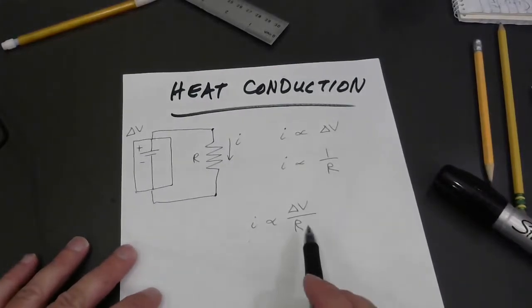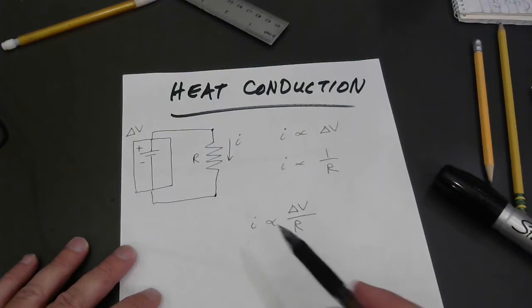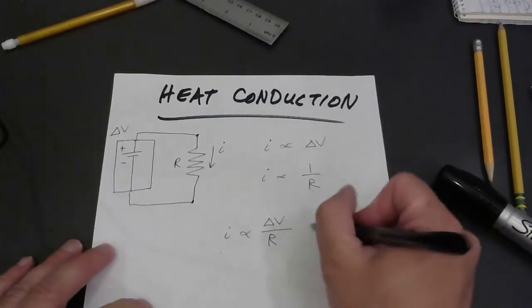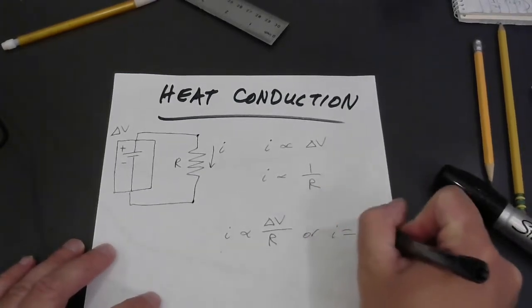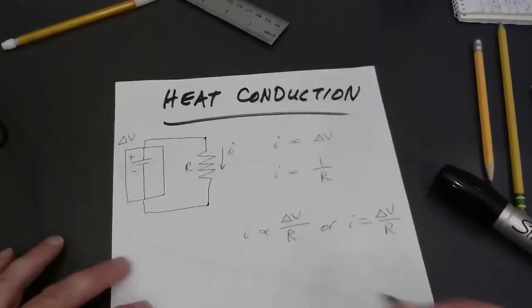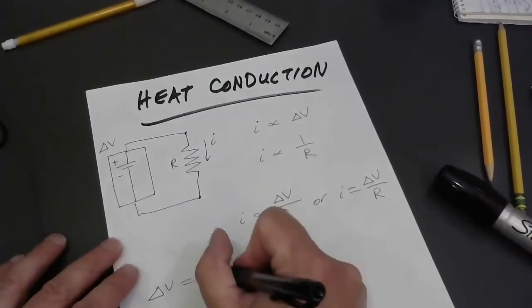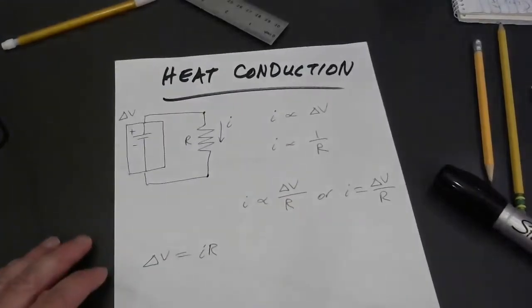If you choose the appropriate units for all three quantities, then you don't even need to use a proportionality symbol. You can just say that current equals voltage divided by resistance. Usually, that's written V equals IR or delta V equals IR.